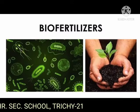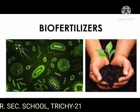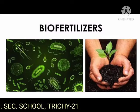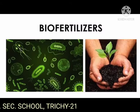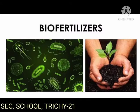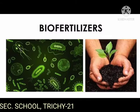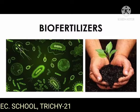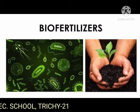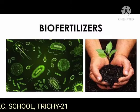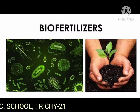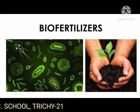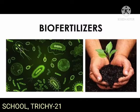Green manure is obtained from undecomposed green materials derived from leguminous plants — example: sun hemp. Bio fertilizers are substances that contain living microorganisms which, when applied to seeds, plant surfaces, or soil, colonize the rhizosphere or the interior of the plant and promote growth by increasing the supply or availability of primary nutrients to the host plant.